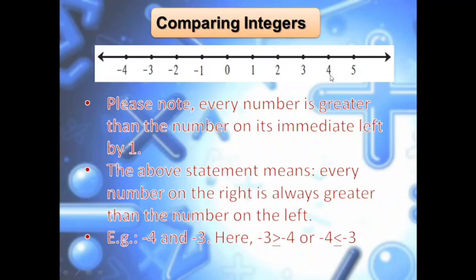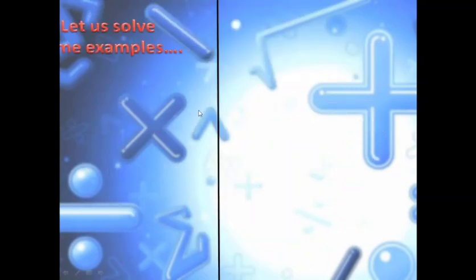When I come to the positive side, taking 4 and 5: 4 is to the left, 5 is to the right. So 5 is the bigger number and 4 is the smaller number. This is how you compare integers. Let us have some examples first.